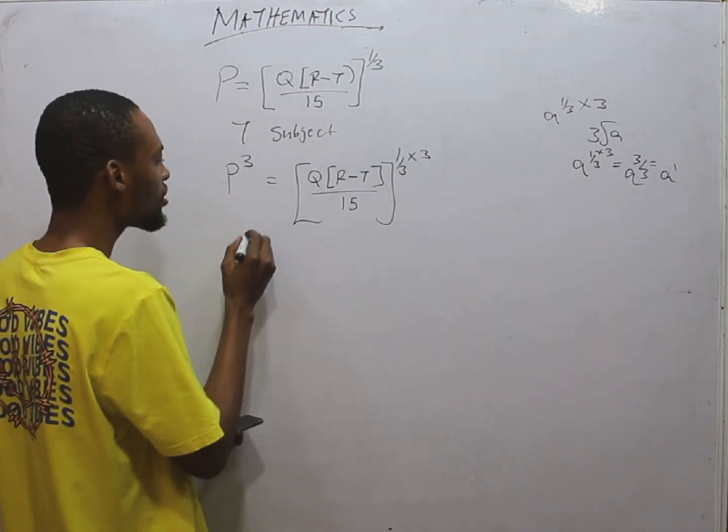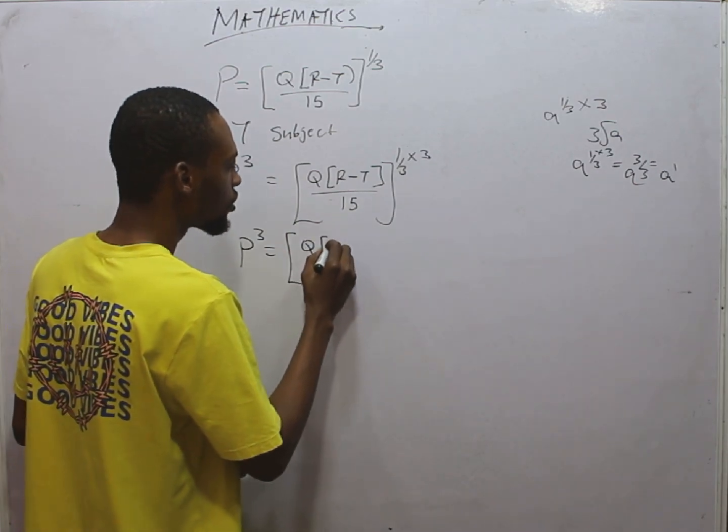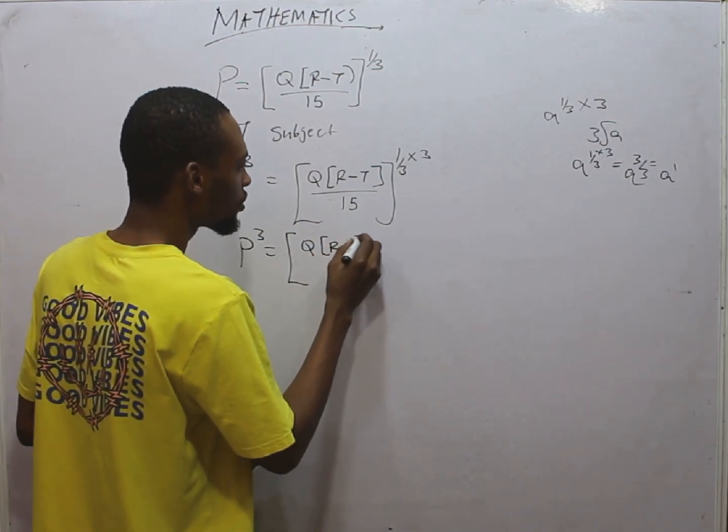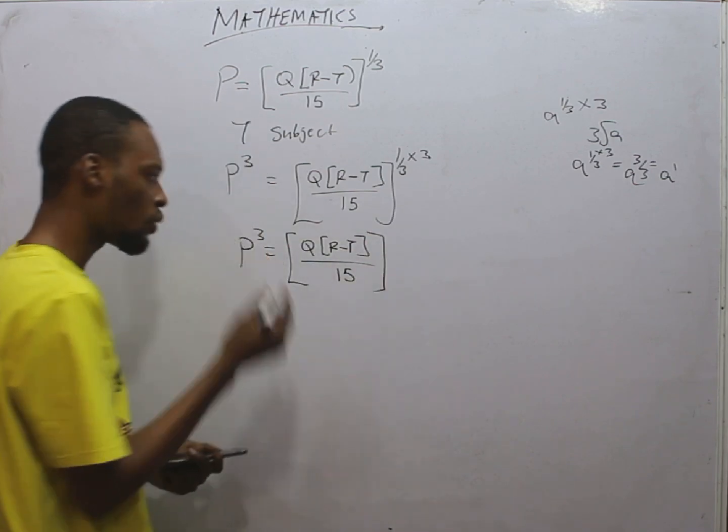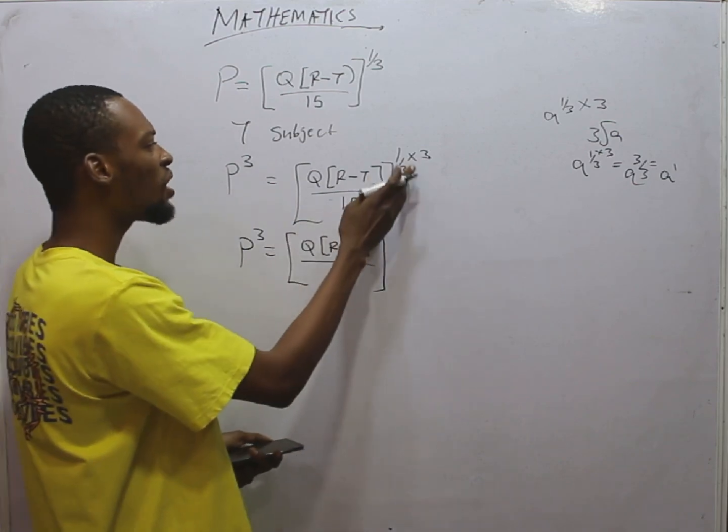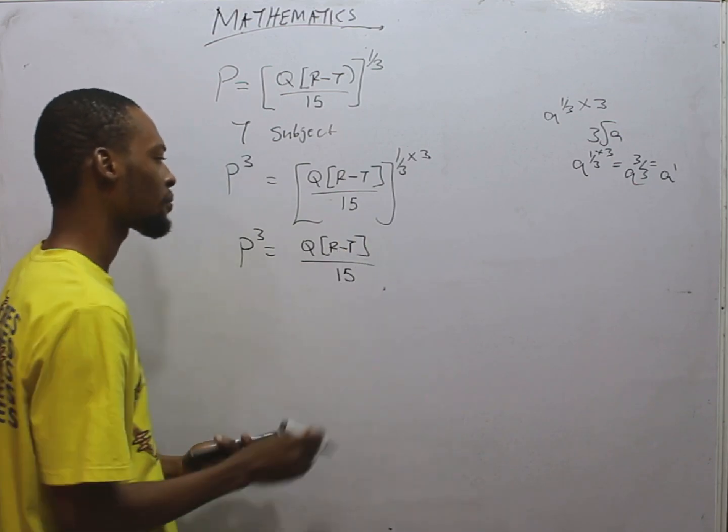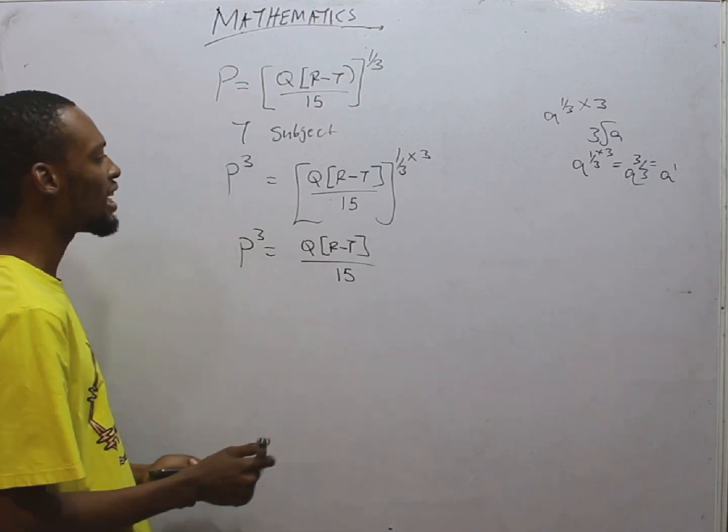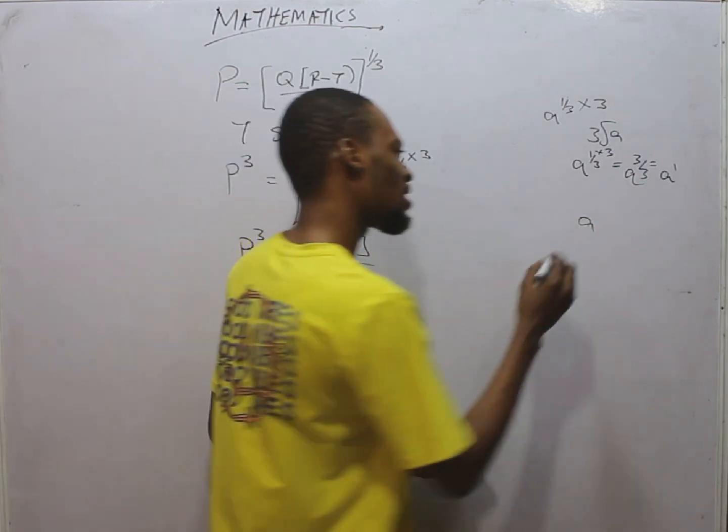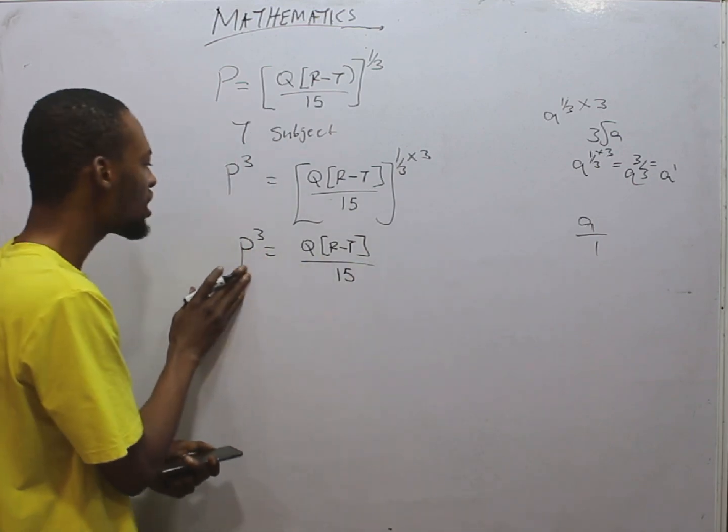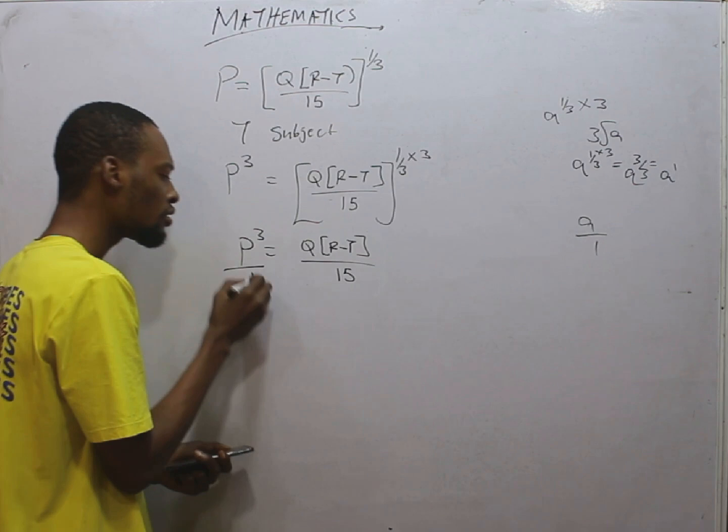Here is P raised to the power of 3 equals Q R minus T over 15 times 1 over 3 times 3. In this case, 1 over 3 times 3 is 1, so we've eliminated this or simplified it. We now have P raised to the power of 3 equals Q R minus T over 15. Since we don't have raised to the power of something, we can simply clean here so that it becomes clearer.